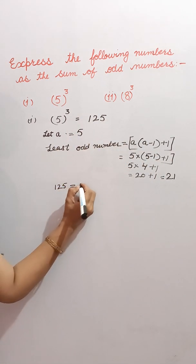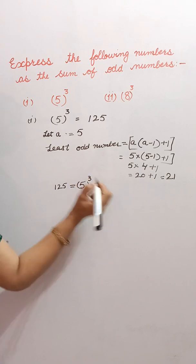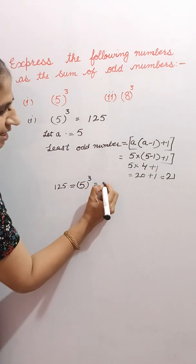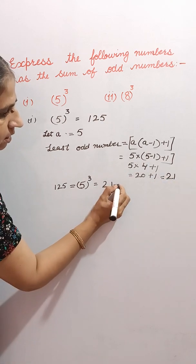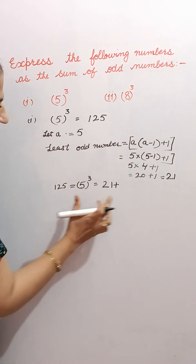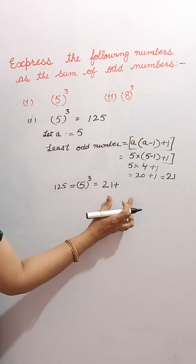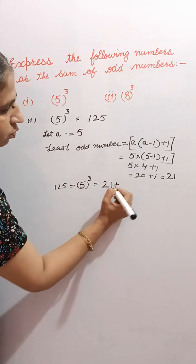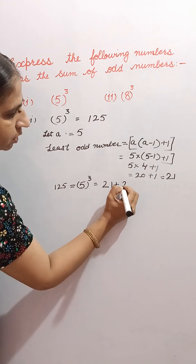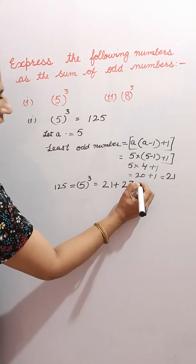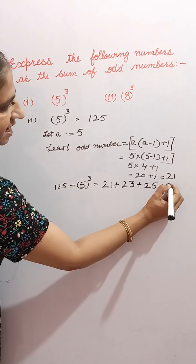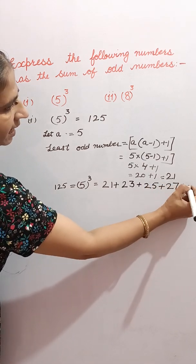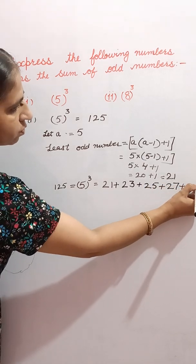So, 125 — that is equal to 5 cube. The least odd number is 21 and we have to show it as the sum of consecutive odd numbers. So: 21 + 23 + 25 + 27 + 29.